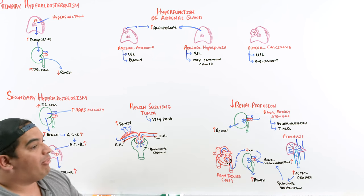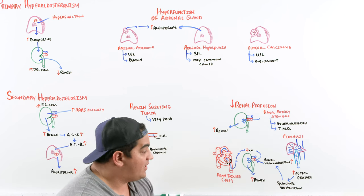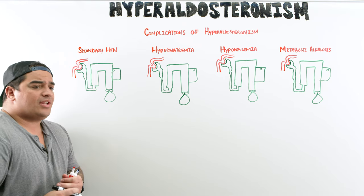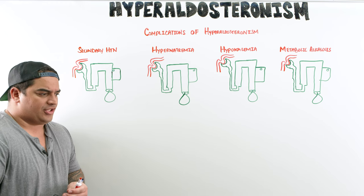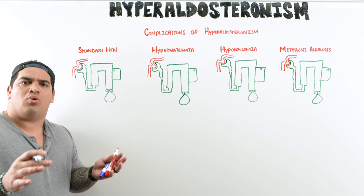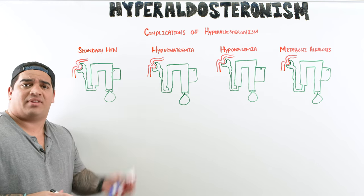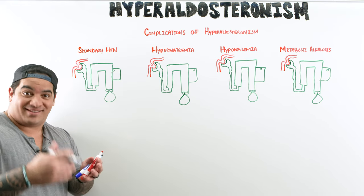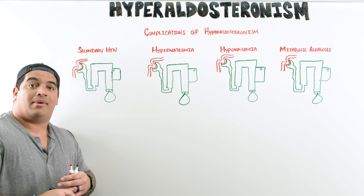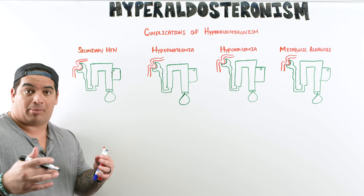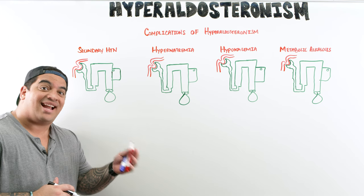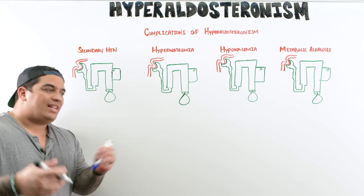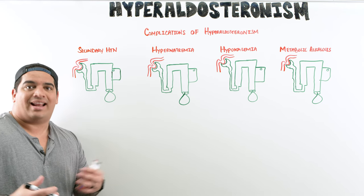At this point we've talked about the pathophysiology of hyperaldosteronism. To summarize: primary is when aldosterone is too high with a reflexive drop in renin — caused by an adrenal adenoma, hyperplasia, or rarely carcinoma. Secondary is when renin is high and drives increased aldosterone — caused by a JG cell tumor or poor renal perfusion. Now let's talk about the complications when a patient has hyperaldosteronism.